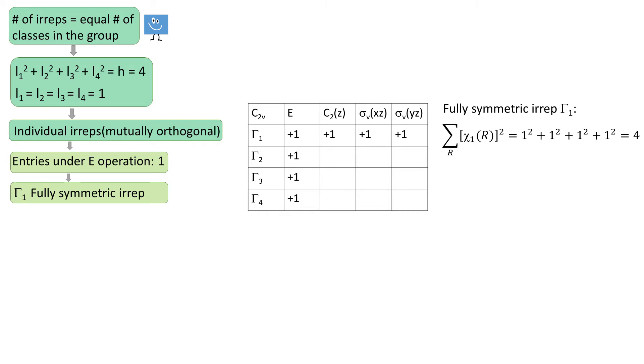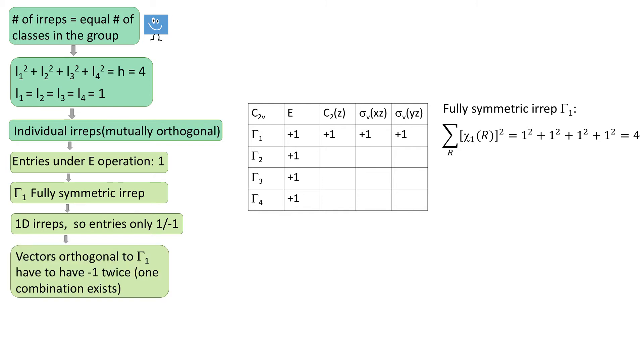So let's carry on with filling in our character table. We have only 1 dimensional representations, so each entry will only be 1 or minus 1. To get an orthogonal vector to our first vector tau1, the other vectors have to have 2 negative entries. We only have 3 by 3 section to complete, so let's put 2 negative numbers in each row.